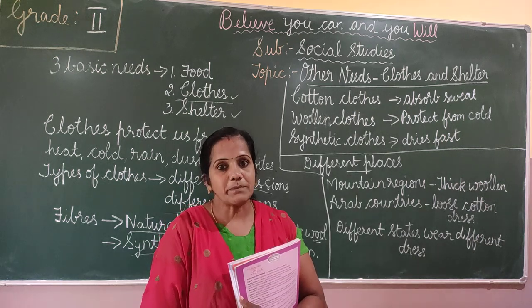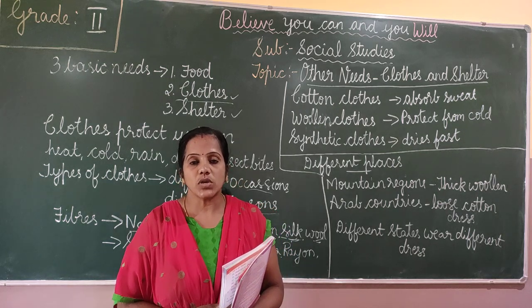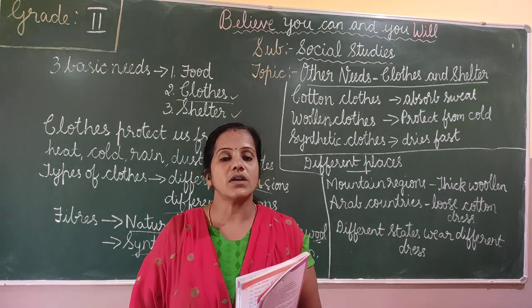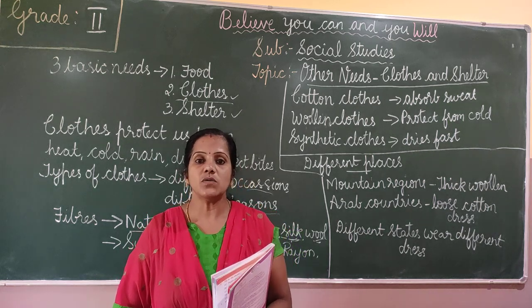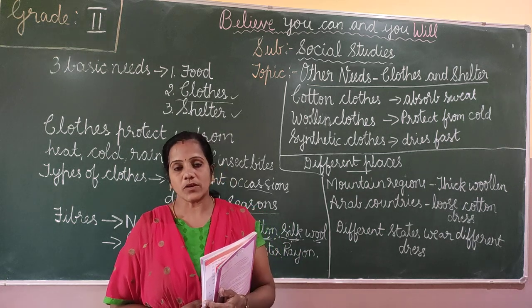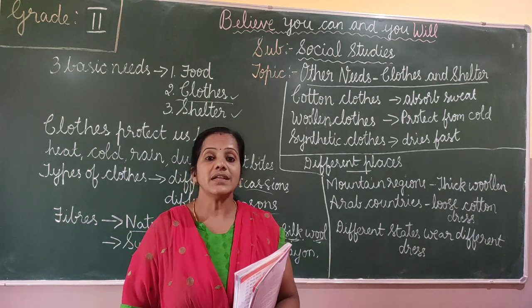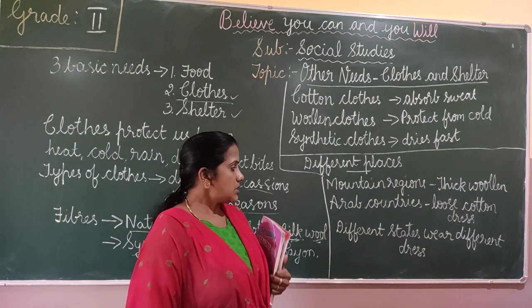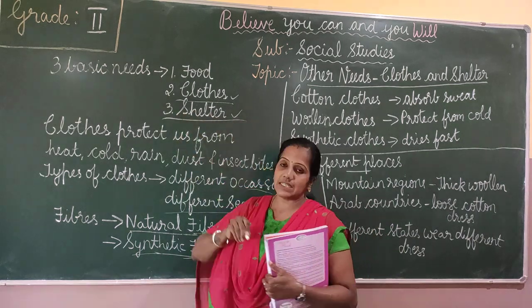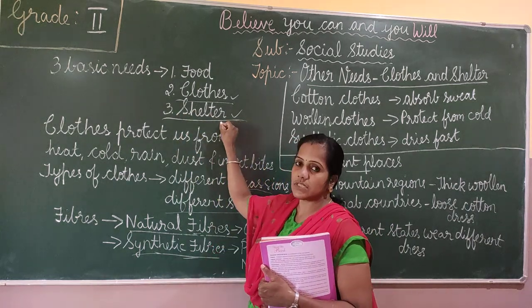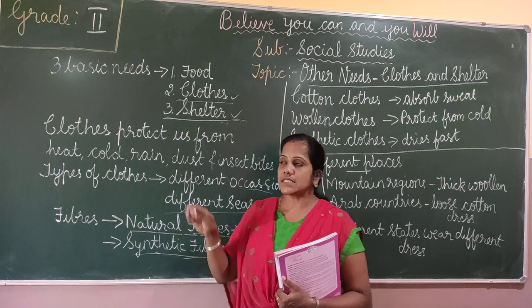In different places different types of dress are worn. In mountain regions, as it is very cold, people wear thick woolen clothes. In Arab countries it is too hot, so people wear loose cotton dress. In different states of our country, people wear different types of dress. So this was about the clothes — in the next class we are going to discuss about the next basic need, which is shelter.